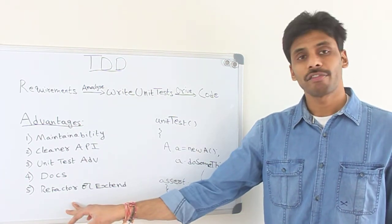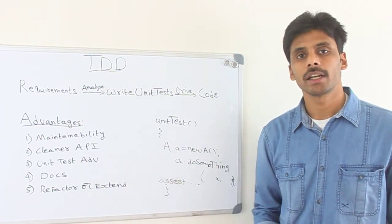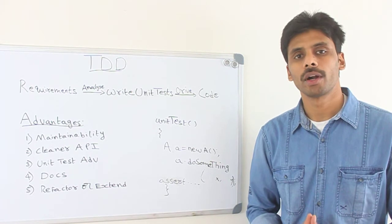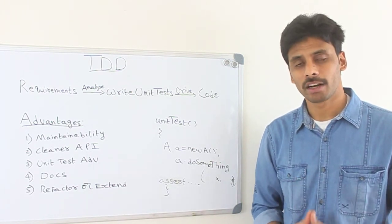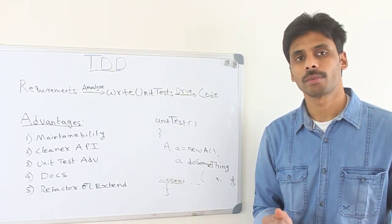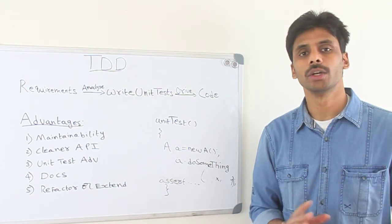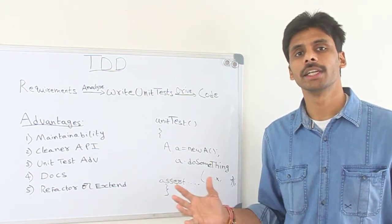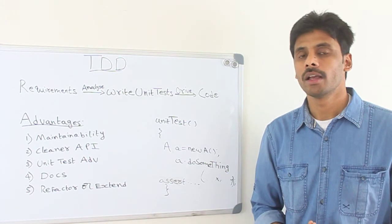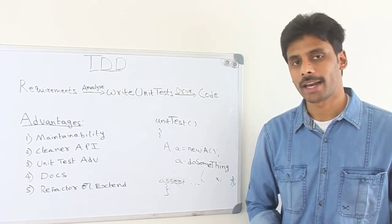Last but not the least, refactoring and extending. If you find a piece of code that can be improvised and refactored, you can run the tests, make sure all the tests are passing, then do the TDD drive, even refactoring through TDD, which is very helpful in making things correct.